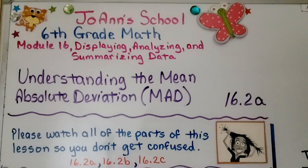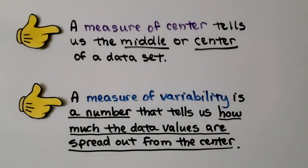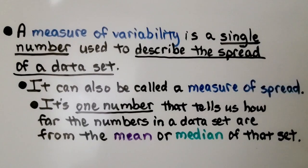Lesson 16.2a: Understanding the Mean Absolute Deviation, MAD. A measure of center tells us the middle or center of a data set. A measure of variability is a number that tells us how much the data values are spread out from the center. A measure of variability is a single number used to describe the spread of a data set, and can also be called a measure of spread.